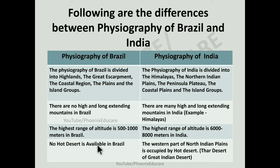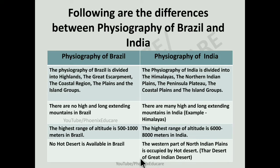No hot desert is available in Brazil. But in the case of India, the western part of the Northern Indian Plains is occupied by a hot desert. The name of the desert is the Thar Desert or Great Indian Desert, also called Marusthali. No desert is found in Brazil, but we find desert in India.